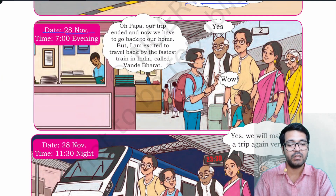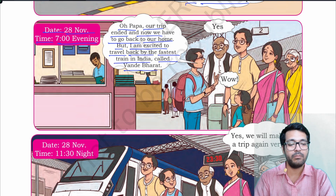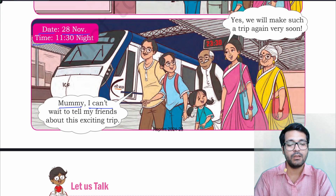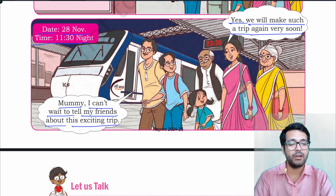On 28th November, at 7 in the evening, the boy says, 'Oh Papa, our trip ended and now we have to go back home, but I am excited to travel by the first train in India called Vande Bharat!' The girl says, 'Wow!' Date 28th November, time 11:30 at night. Boy says, 'Mommy, I can't wait to tell my friends about this exciting trip.' Mother says, 'Yes, we will make such a trip again very soon.'